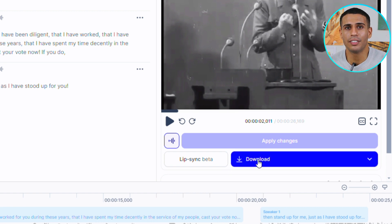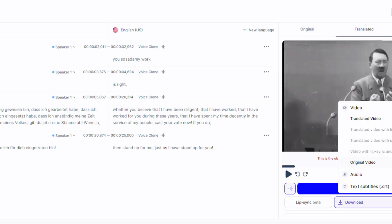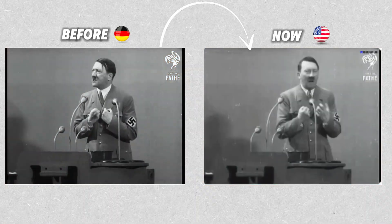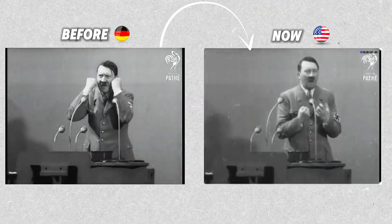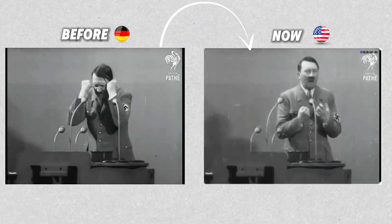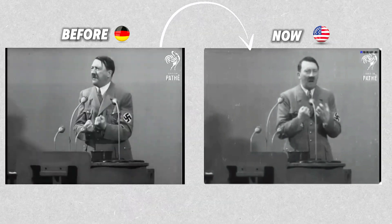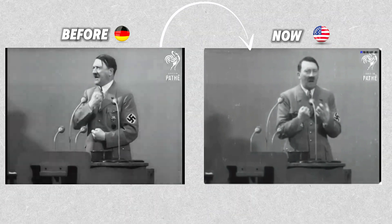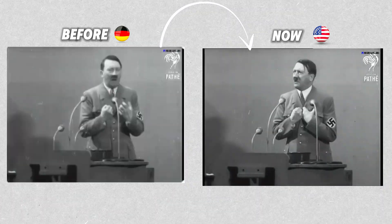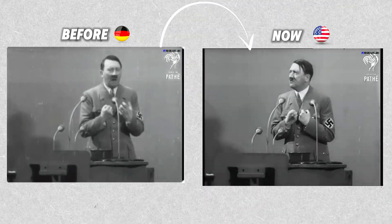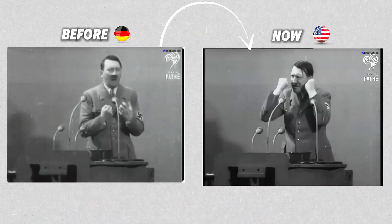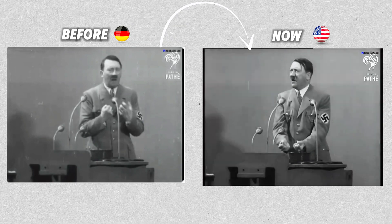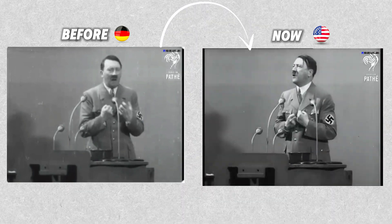The last step involves downloading the translated video, now complete with voice cloning and subtitles in the chosen language. [Translation result:] 'My work is for the truth. If you believe that I was proud, that I have worked, that I have not invested in these years for you, that I have used my time in the service of my people, give up your voice. If yes, you consider my work is right. Whether you believe that I have been diligent, that I have worked for you during these years, that I have spent my time decently in the service of my people, cast your vote now.'